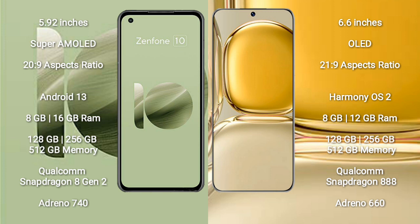The Asus Zenfone 10 runs on the Android 13 operating system. The Huawei P50 Pro runs on the HarmonyOS operating system. The Asus Zenfone 10 comes with 8GB or 16GB RAM and 128GB, 256GB, or 512GB of internal storage.